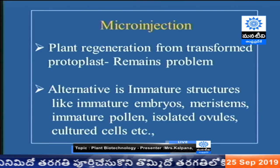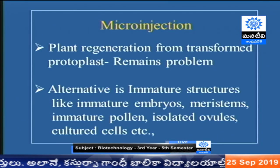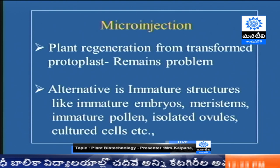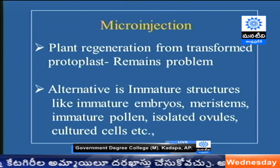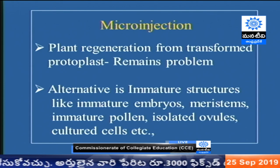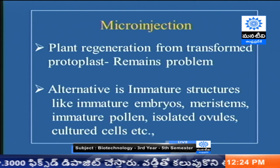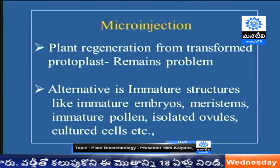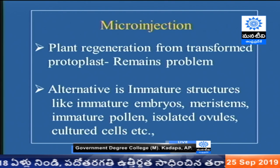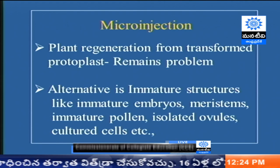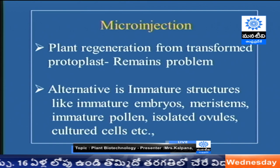The next method is microinjection. Even with modified protoplasts, regeneration from protoplasts is very difficult — it is a major problem. Another approach is to use immature plant cells, maybe the ovum or flower bud, to produce transgenic plants. But the problem here is we often get chimeric plants — where one cell may be transformed but others are not. We can then select only the transformed cells and go for plant regeneration from those specific cells.